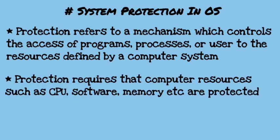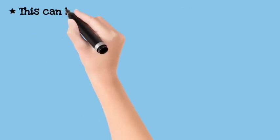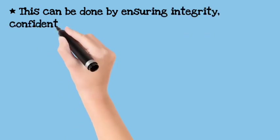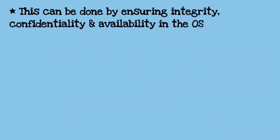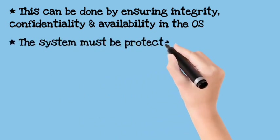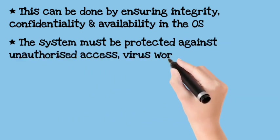For protection, we can use some resources like CPU, software, and memory — all of these things that we need to protect. One important thing is that we have a security system, and that is the principles of security. We have integrity, confidentiality, and availability maintained. All of these things are linked in the description box where you can understand integrity and confidentiality.